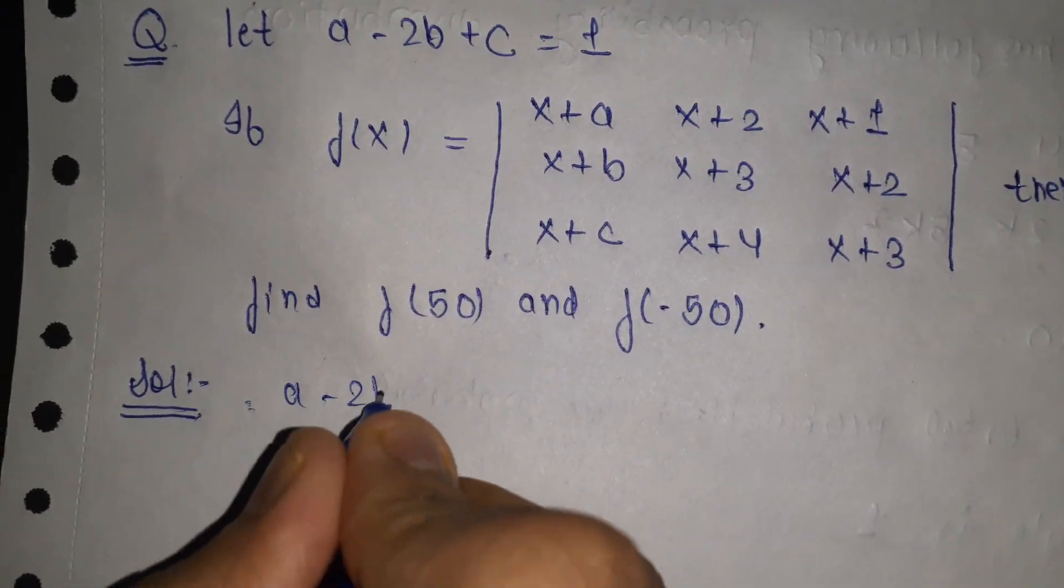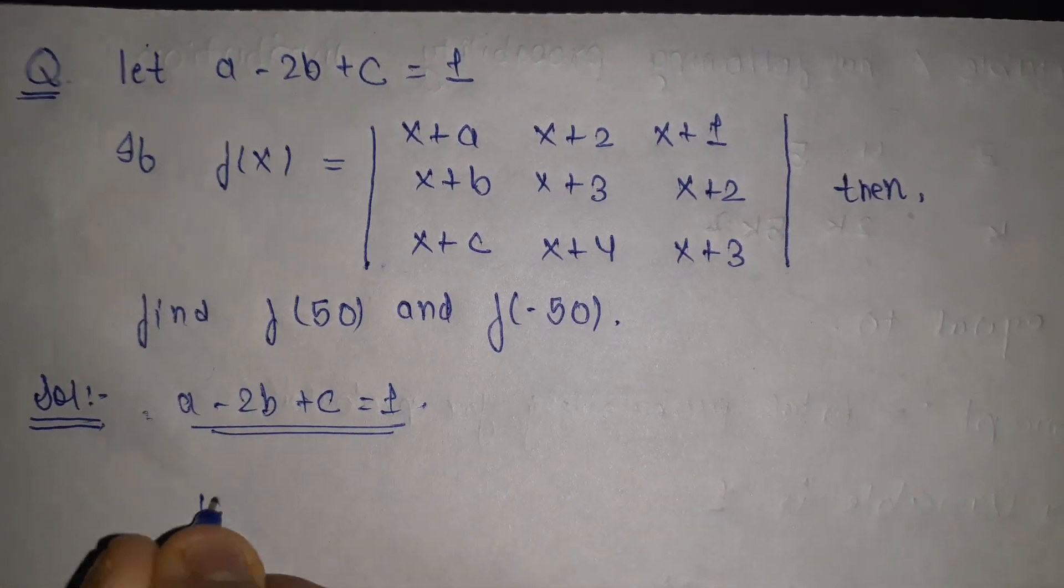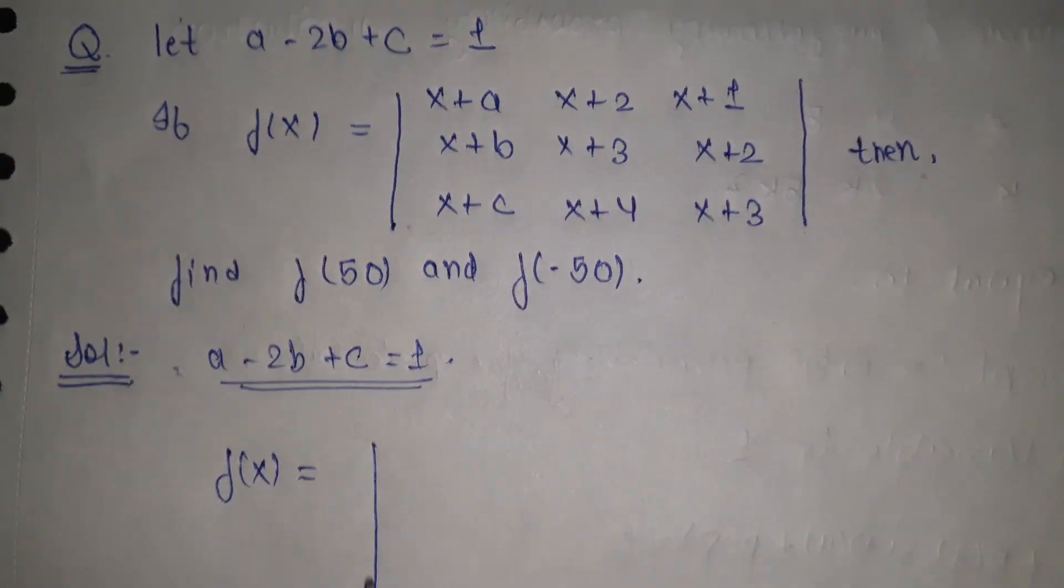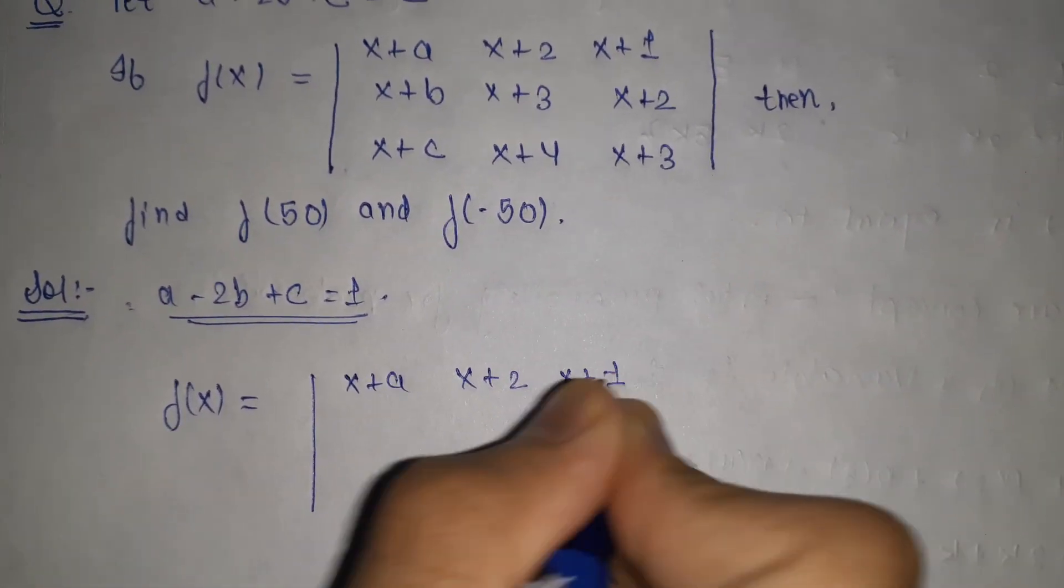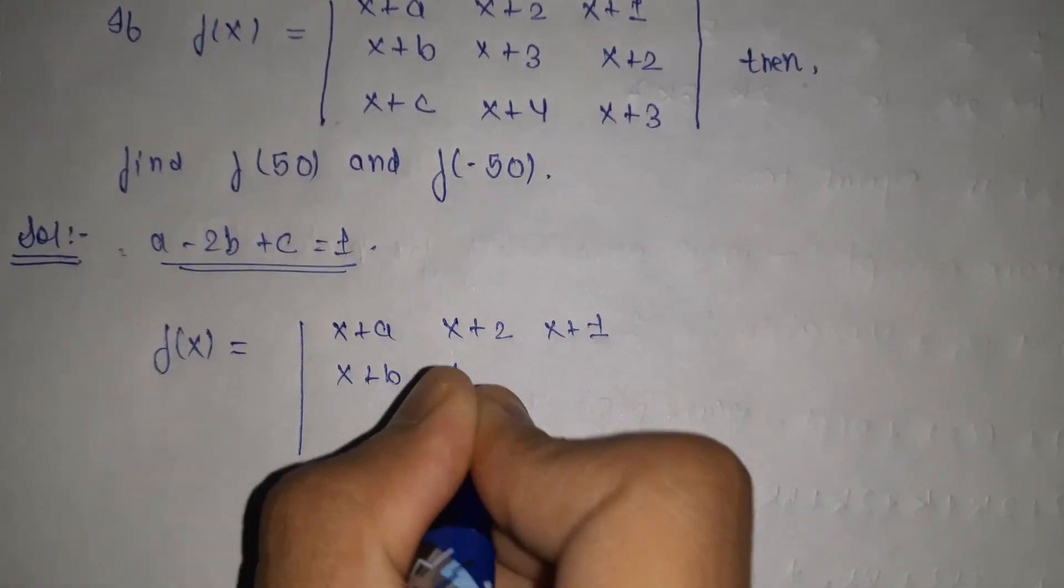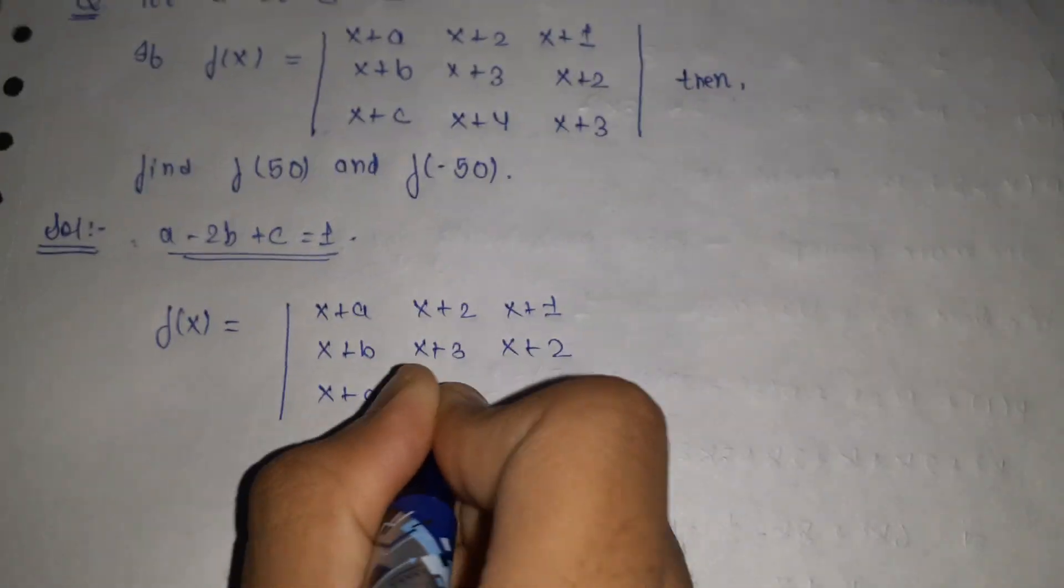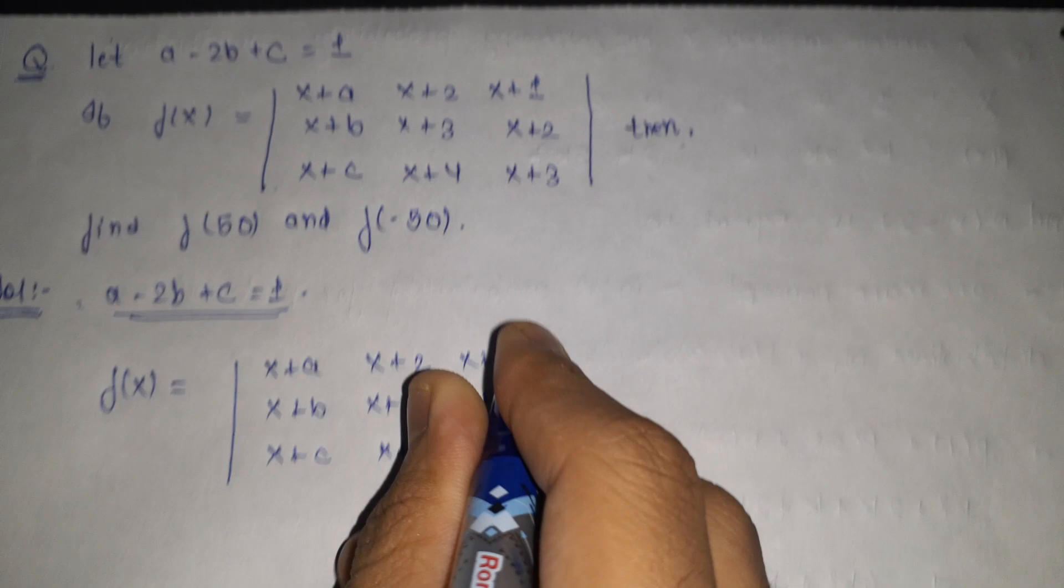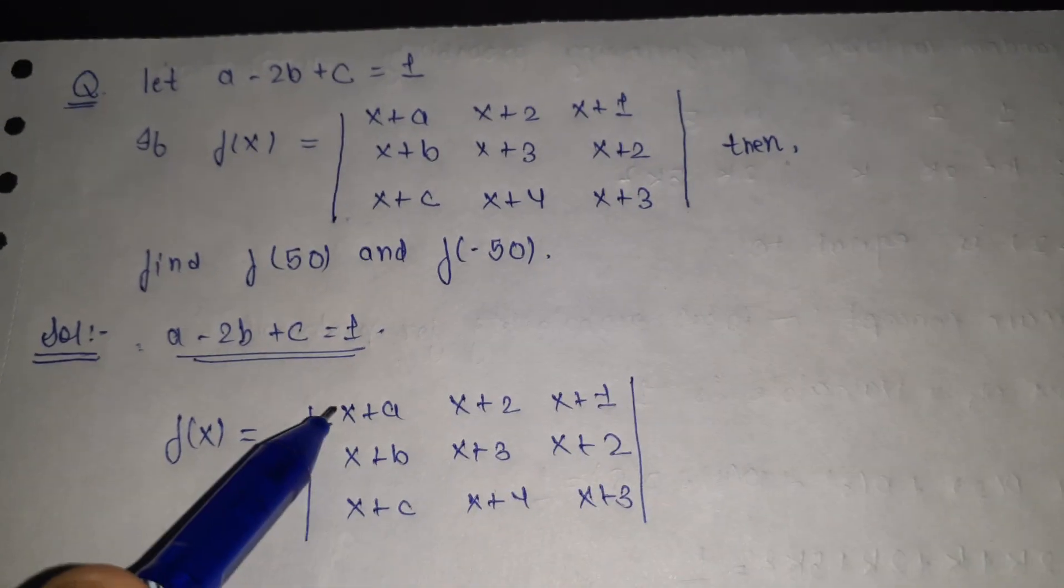Given: a minus 2b plus c equal to 1, and given function f(x) in form of determinant with entries x plus a, x plus 2, x plus 1 in first row; x plus b, x plus 3, x plus 2 in second row; and x plus c, x plus 4, x plus 3 in third row. This is the given function in determinant form, so either you can fully open the determinant using properties or we can use row operations to simplify it.